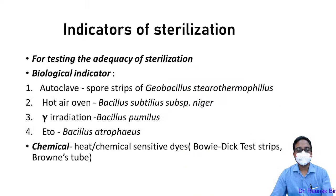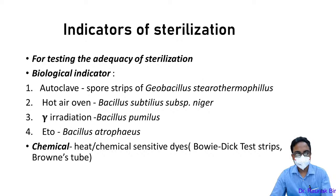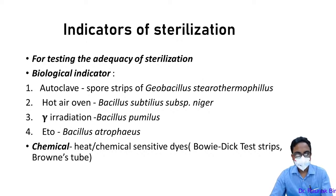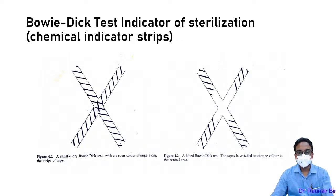For testing adequacy of sterilization, we use biological indicators: for autoclave — Geobacillus stearothermophilus spores; for hot air oven — Bacillus subtilis spores; for gamma radiation — Bacillus pumilus spores; for ETO — Bacillus atrophaeus; for filtration — Brevundimonas diminuta and Serratia marcescens. Chemical indicators include heat or chemical-sensitive dyes like Bowie-Dick tape strips and Brownie's tubes.